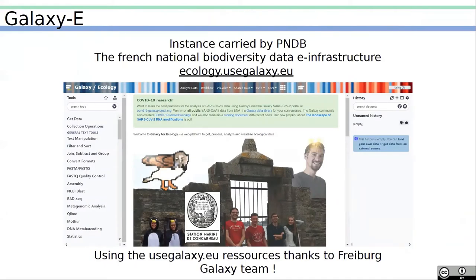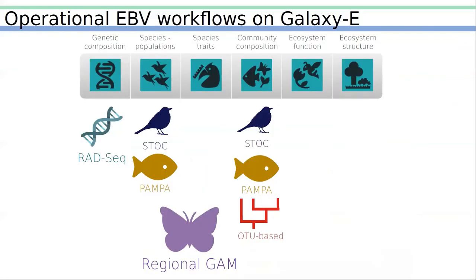We have our own Galaxy for Ecology platform, which is carried by us from the PNDB. We have access to the usegalaxy.eu computing resources, thanks to the Freiburg Galaxy team. On this instance, we identify four fully operational EBV workflows, some fully or partially implemented by us, and some by other communities.